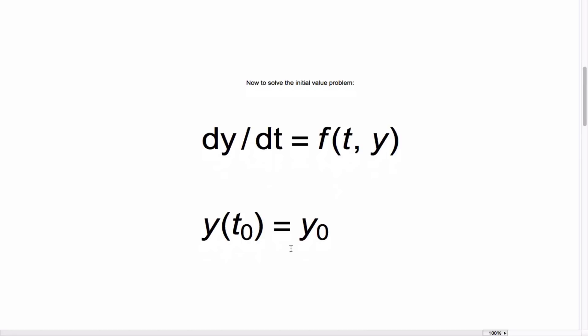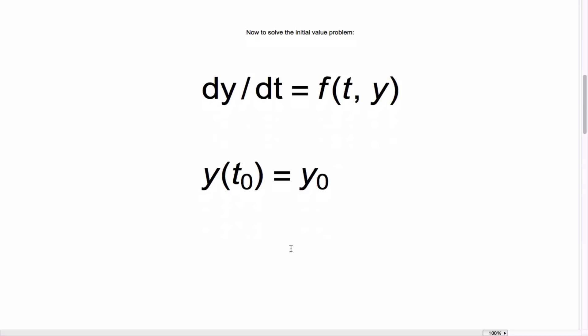First, some preliminaries. Our initial value problem is usually expressed as follows in the so-called normal form, where dy/dt is solved and is equal to f of t,y. f is sometimes called the slope function. Along with that, we give an initial condition.